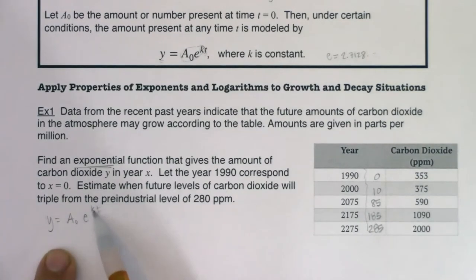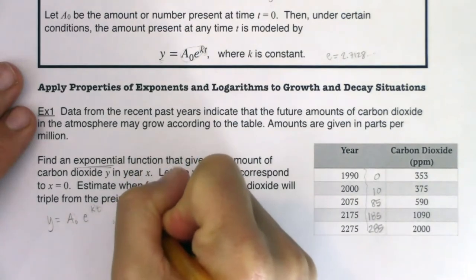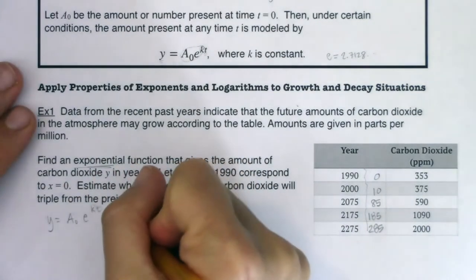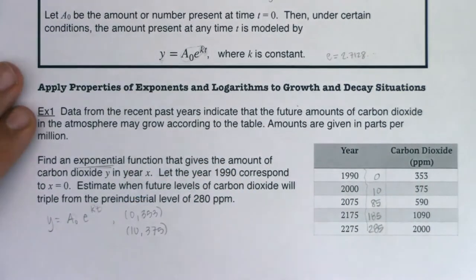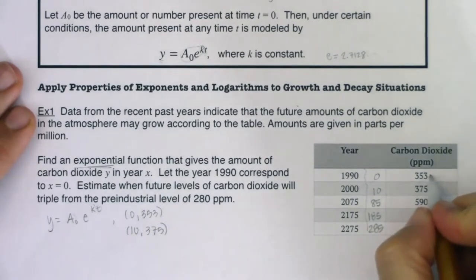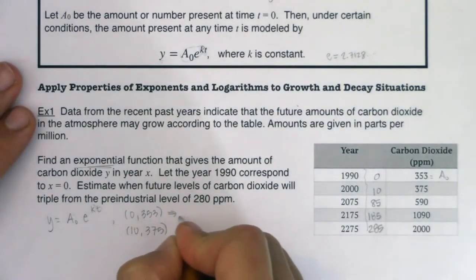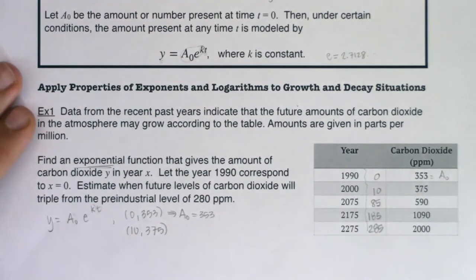I have two constants I need to solve for, k and A₀. So I'm going to need two ordered pairs to make that work. Let me go with my y-intercept. I've got (0, 353) and then (10, 375). The awesome thing about this being your zero is there is my A₀ value. I can see my initial value from the data that was given to me. That implies that A₀ is equal to 353. I initially started with 353 parts per million of carbon dioxide.